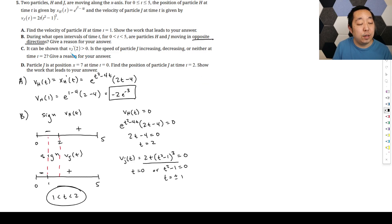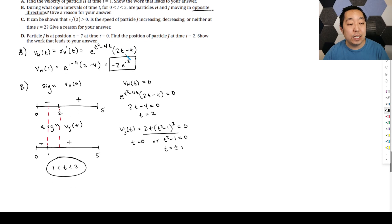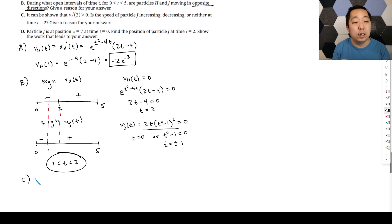Part C. It can be shown that vj prime of 2 is greater than 0. Is the speed of particle j increasing, decreasing, or neither at t equals 2? Well, speeding up or slowing down has to do with whether or not the velocity and acceleration have the same sign. They're saying vj prime of 2 is greater than 0. We need to know what the velocity is. vj of 2, we just calculated here, it's going to be positive from our number line. So it's speeding up. It increases because vj prime of 2 and vj of 2 are the same sign.